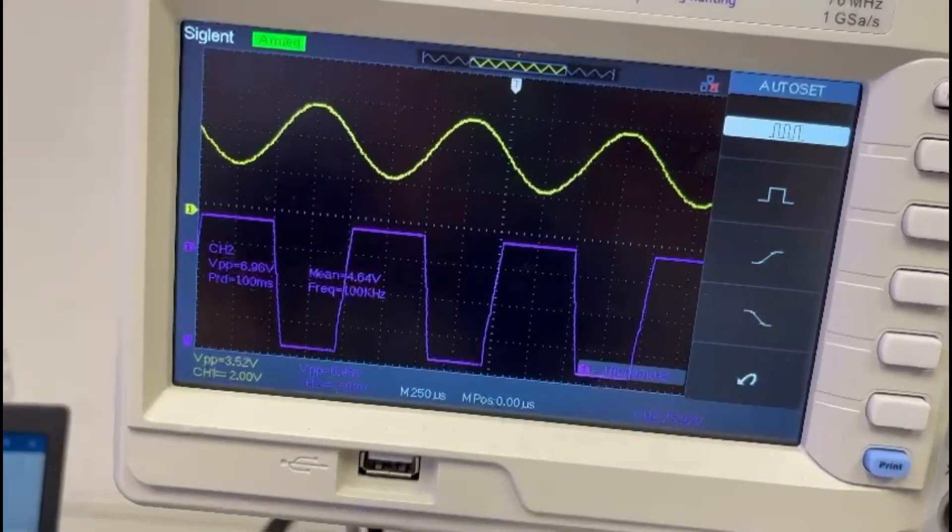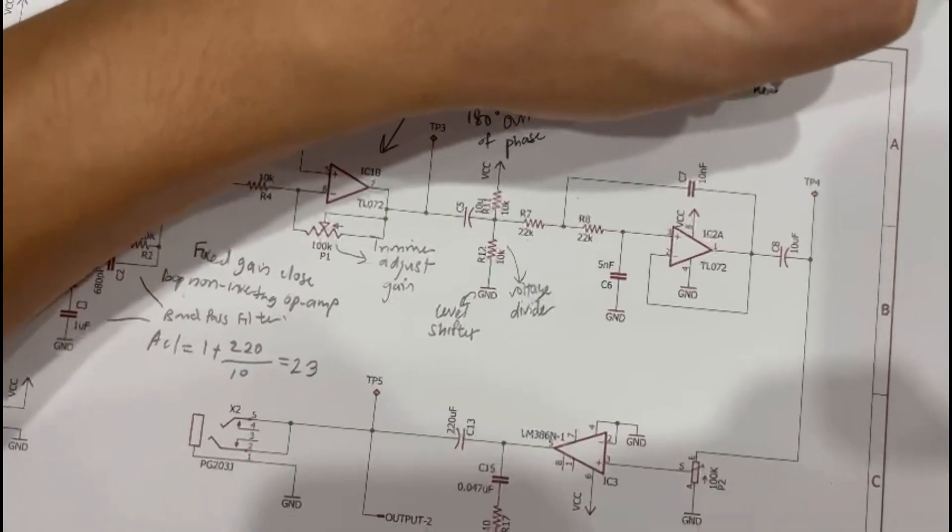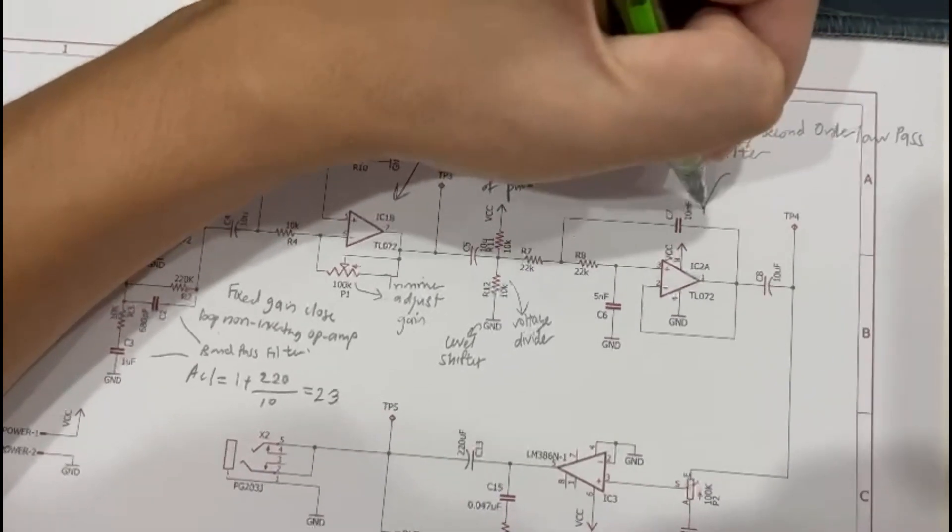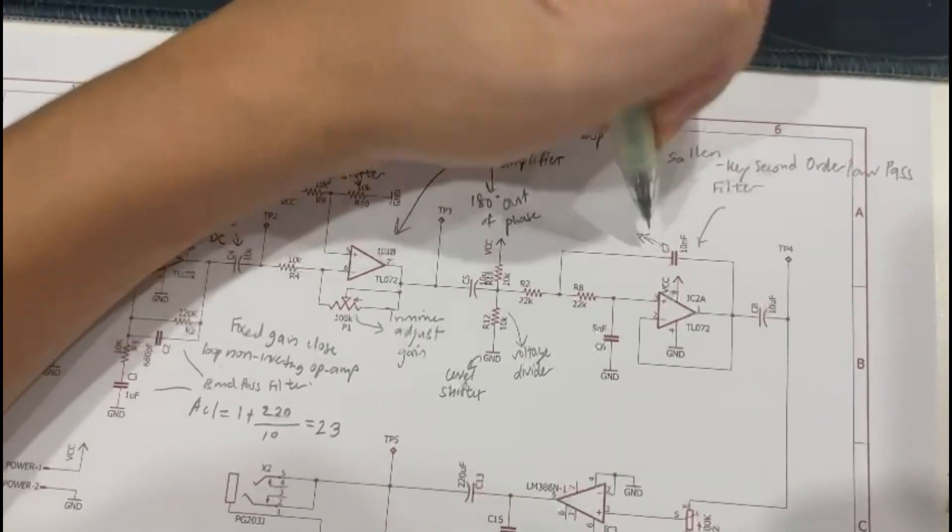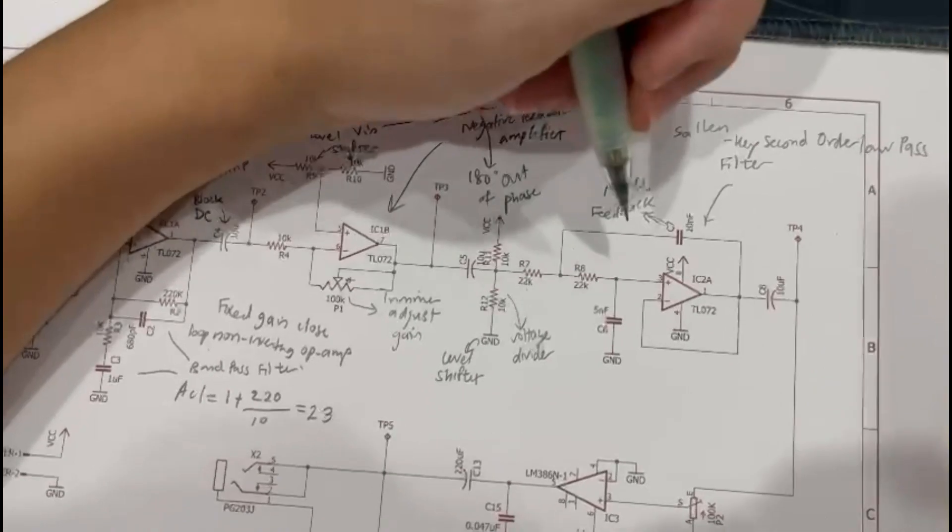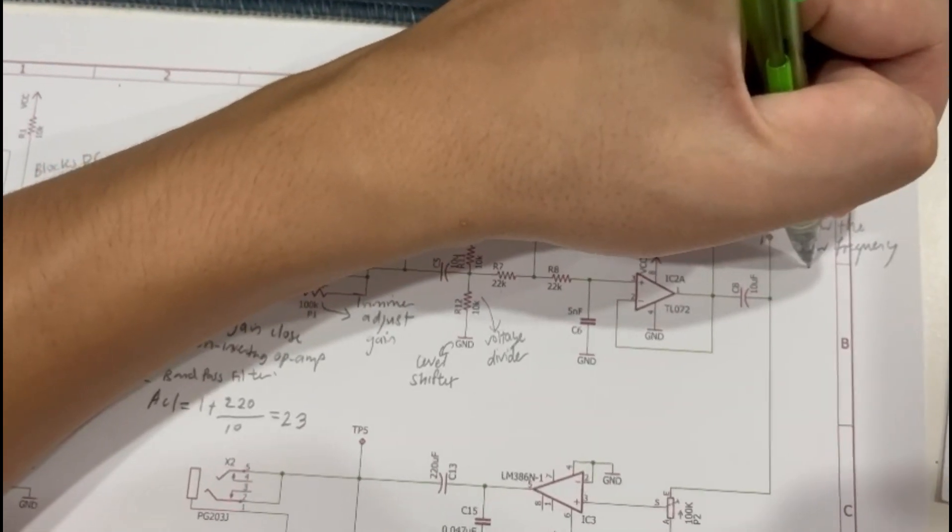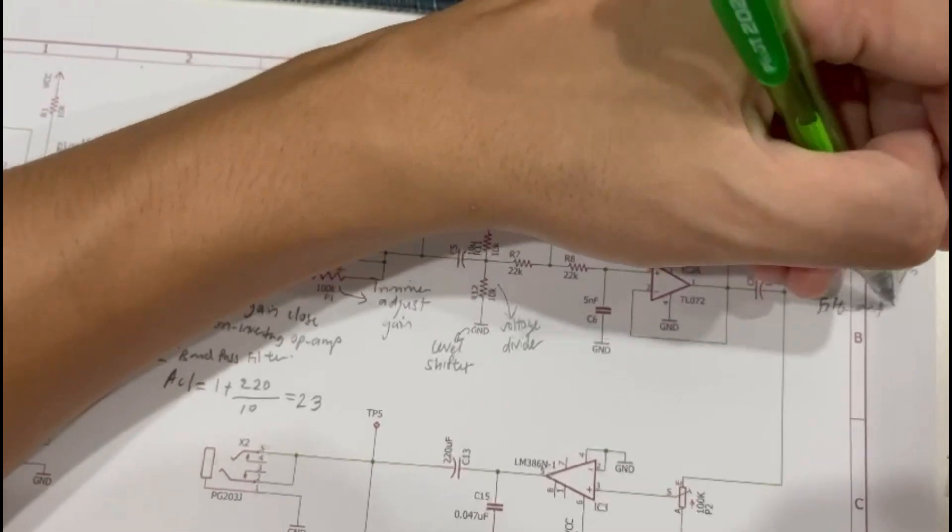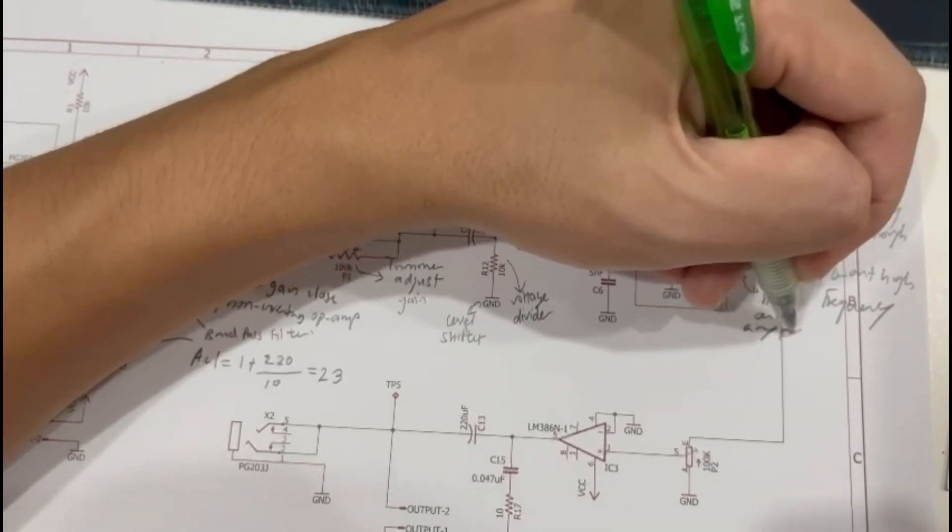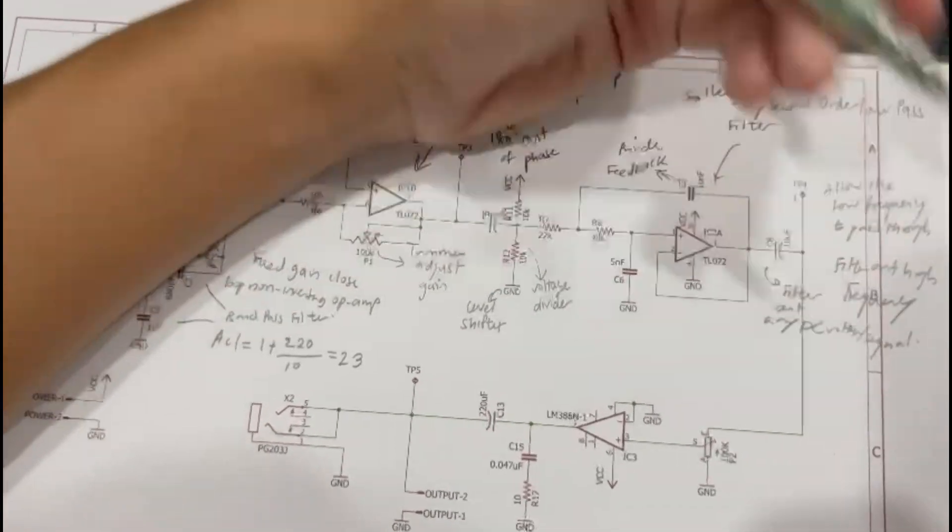In stage 3, capacitor C5 will block out DC and allow AC to pass through. A voltage divider consists of R11 and R12 of 10kohm acts as a single supply mode for the second IC TL072. For IC2A, a second TL072 is being used. It is patched as a Sallen-Key second order low pass filter. It is made out of two low pass RC networks. Capacitor C7 will provide feedback of shaping the response near the edge of the pass band and it allows low frequency to pass through while filtering out the high frequency. Output voltage from IC2A will then pass through capacitor C8 at 10uF to filter out any DC. As the lowest frequency can pass through with 0Hz, then the bandwidth will be equal to the cut-off frequency given by this equation.